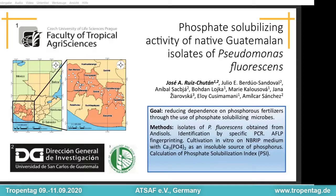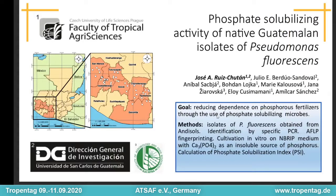Dear audience, my name is José Alejandro Ruiz, and together with my co-authors, I welcome you to our research titled 'Phosphate solubilizing activity of native watermelon isolates of Pseudomonas fluorescens.' Our research was carried out in the region of Guatemala where undissolved soils are present — in the southern, central, and western regions of the country. These soils have a volcanic origin and present the phosphorus fixation phenomenon, in which the soil retains phosphorus, avoiding uptake by the plant and increasing application of chemical fertilizers. Our goal is reducing dependence on phosphorus fertilizers through the use of phosphate solubilizing microbes — in this case, we evaluated Pseudomonas fluorescens bacteria.